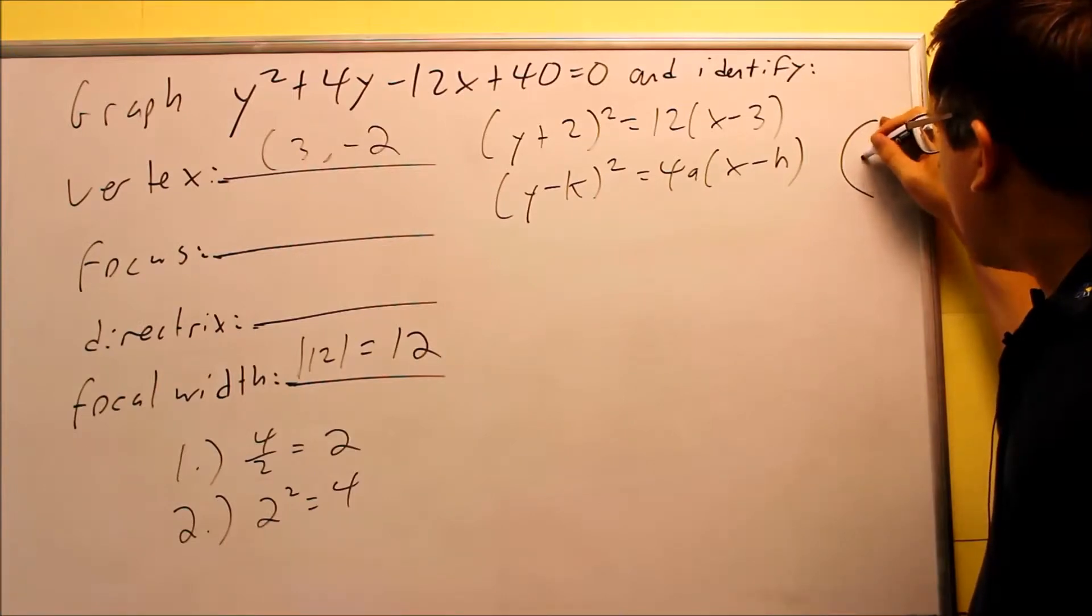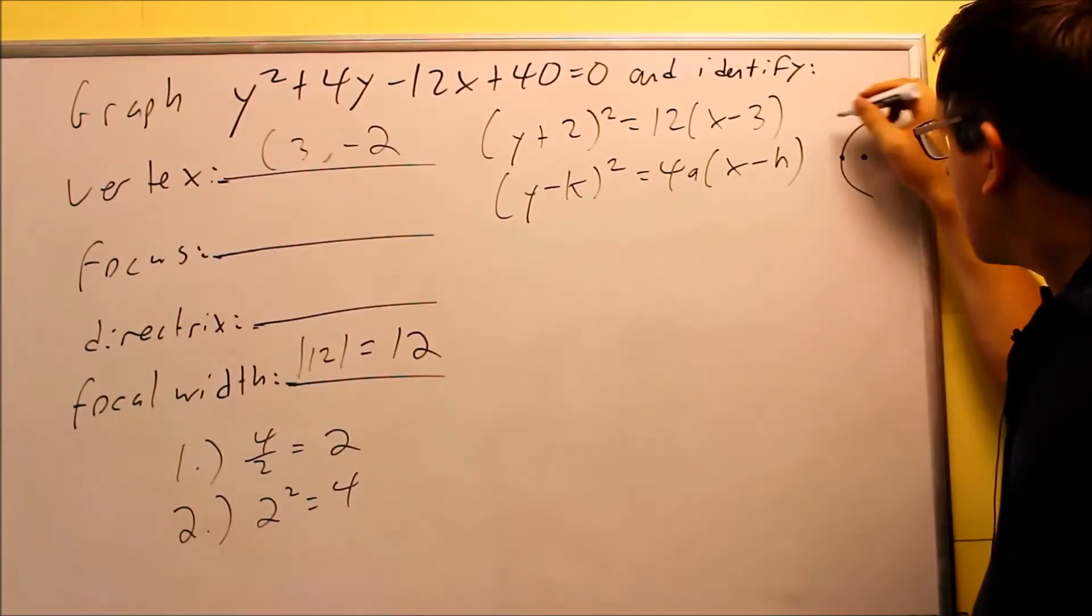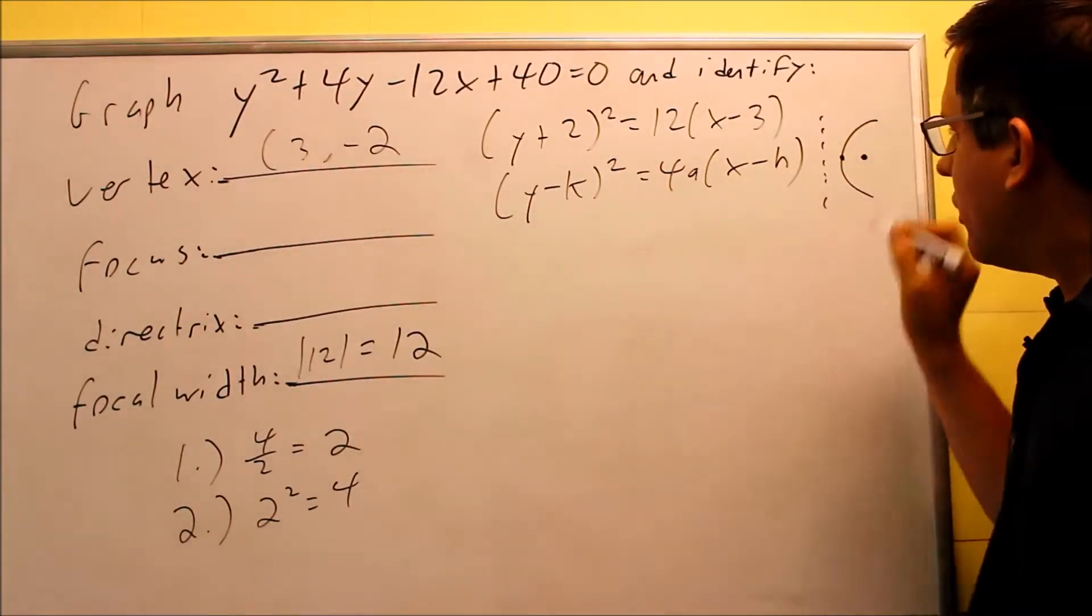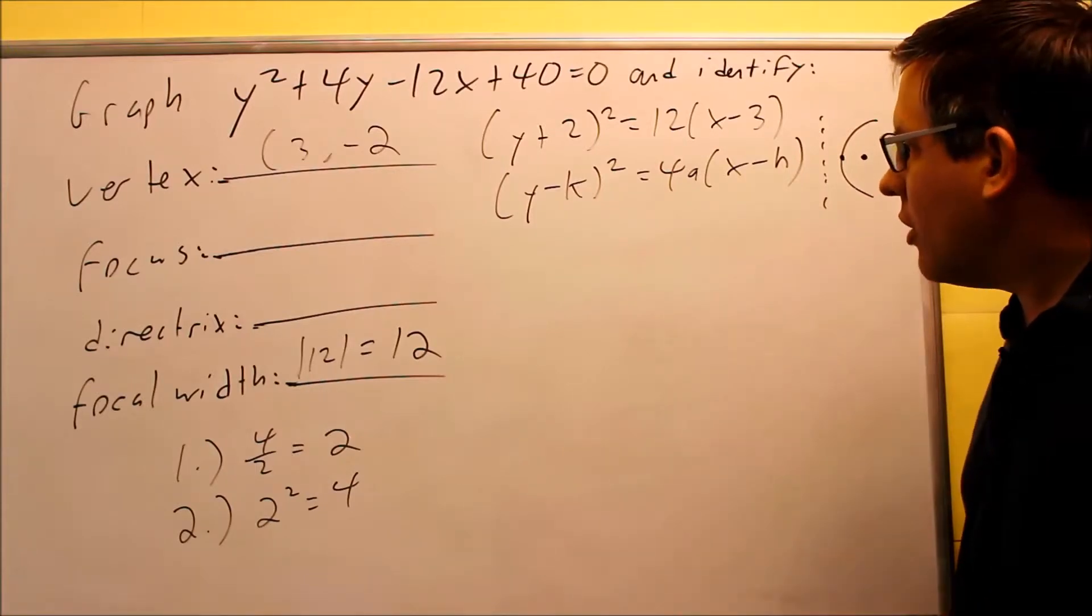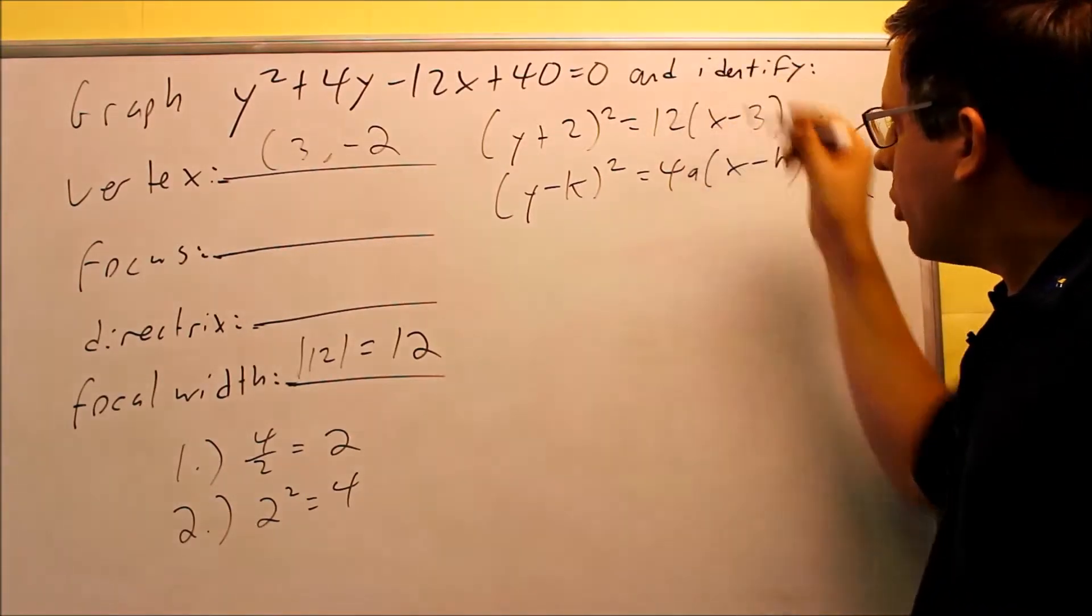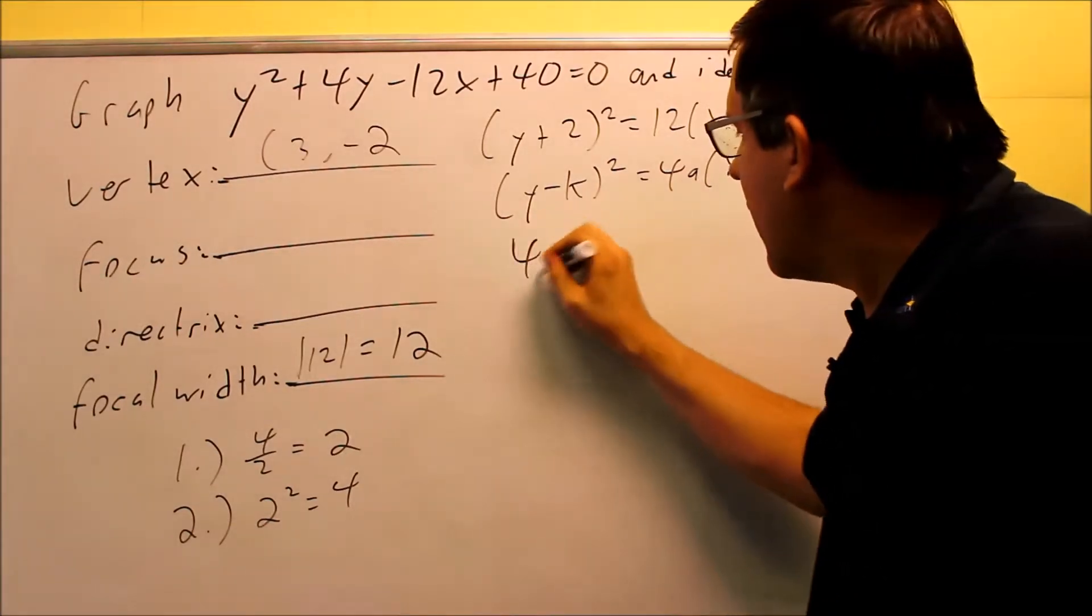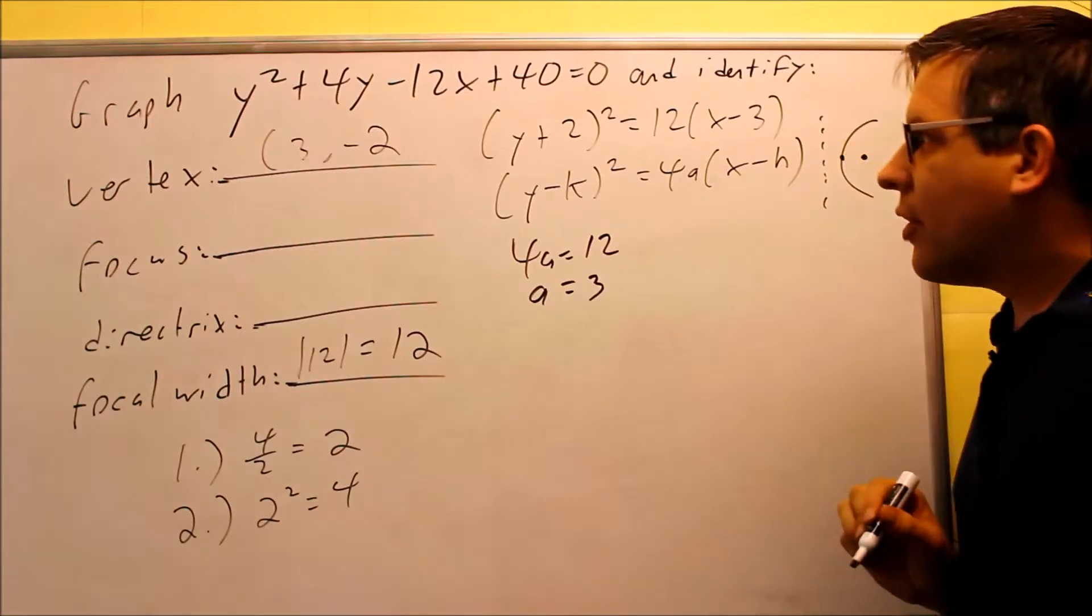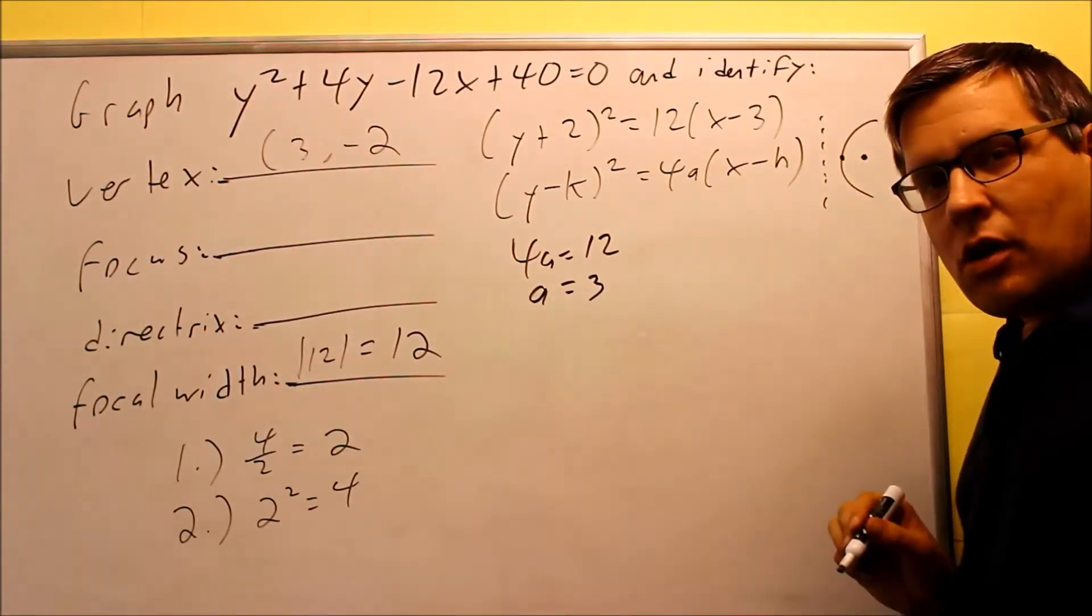Which means that I have to go to the right to get my focus and then I have to go to the left to get my directrix. So that's what I need to do. I need to figure out what the a value is. So we're just going to set these two parts of the formula equal to each other. So 4a equals 12. My a is going to have to be 3 here in this case. All right. Now I know how far to go in each direction when I draw my graph.